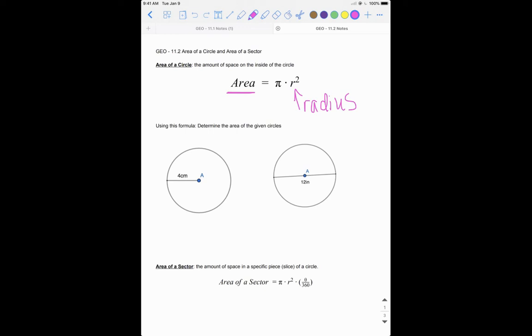Our radius is 4 centimeters. To find this area, all we need to do is area equals pi times 4 squared, which gets us pi times 16.